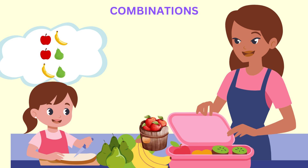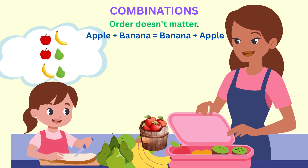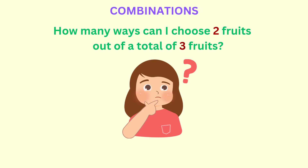Since the order of the fruits doesn't matter — meaning that choosing apple and banana is the same combination as banana and apple — Zuri has three combinations of fruits she can put in her lunch bag. Now, what other method could she have used to determine the number of ways she can choose two fruits from a total of three fruits? We'll look at two methods: the box method and the formula.